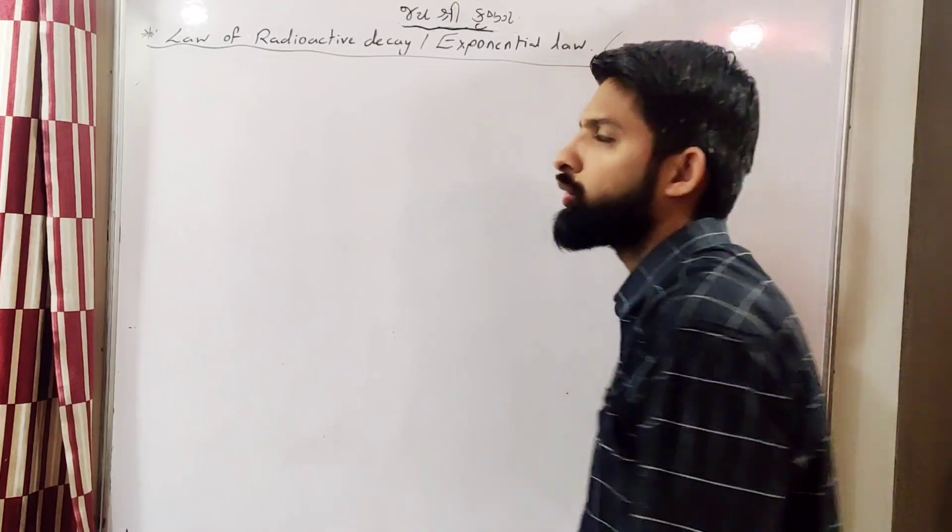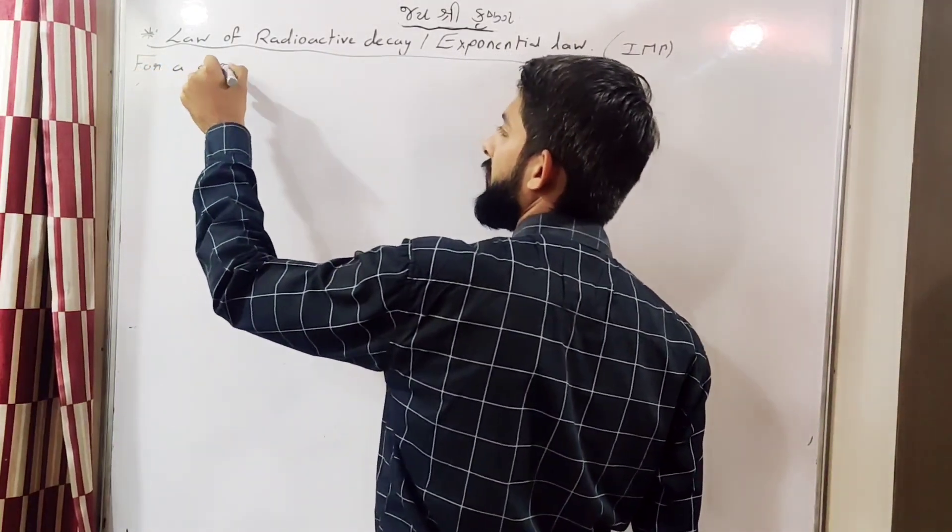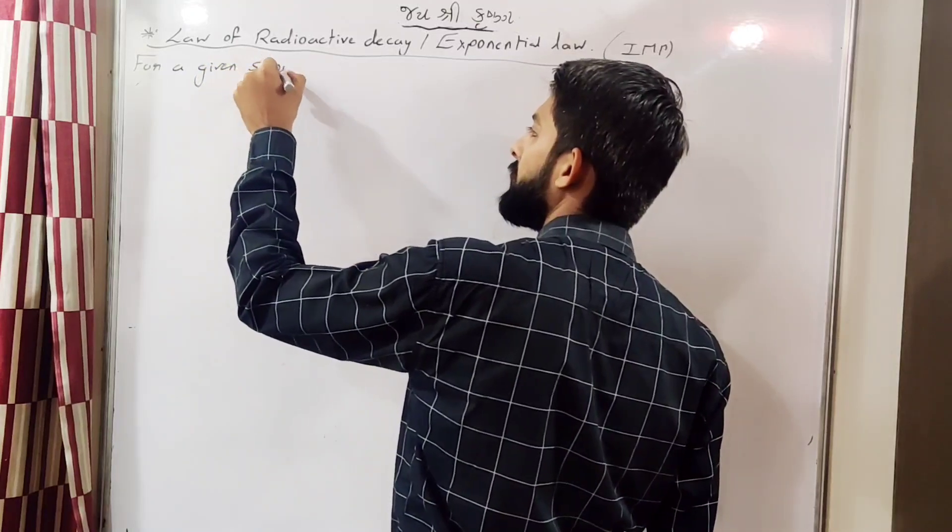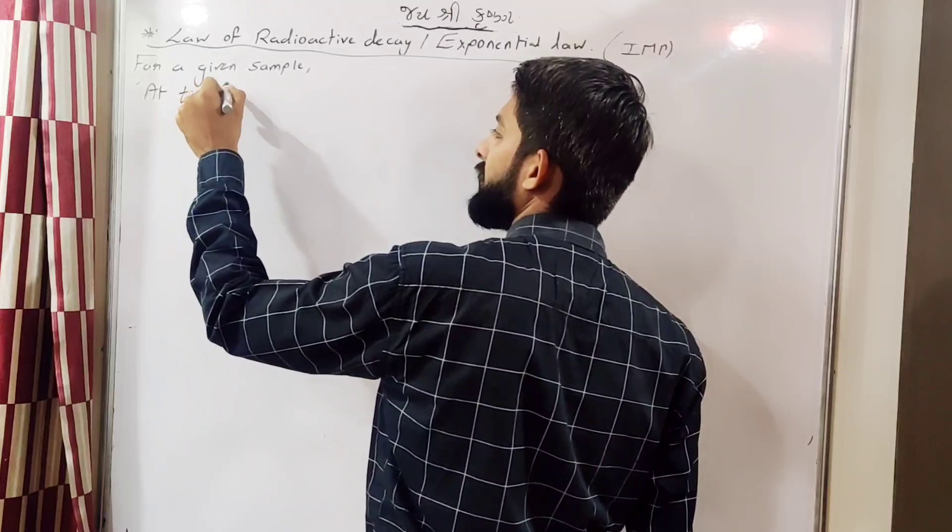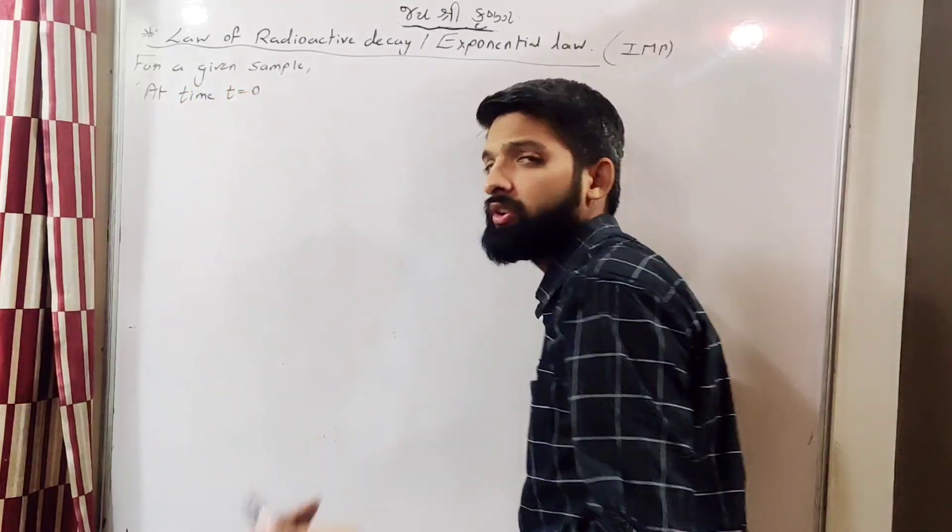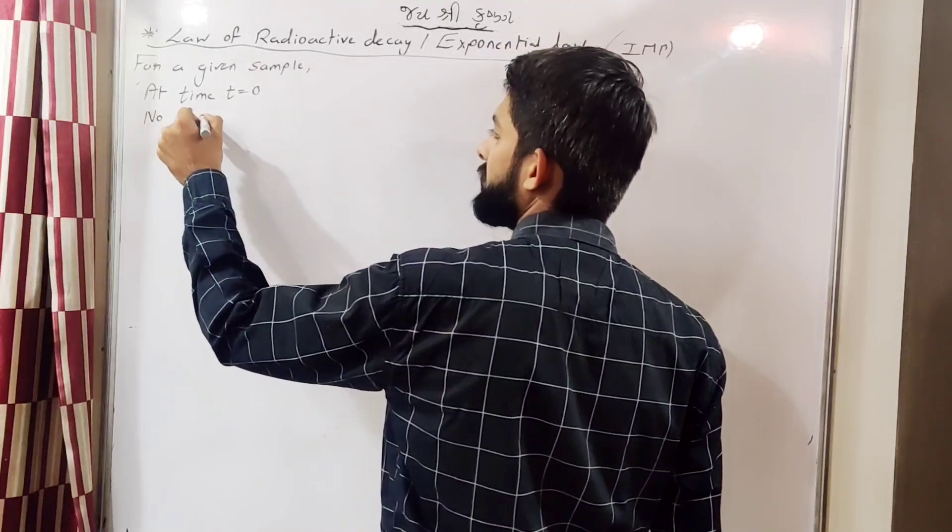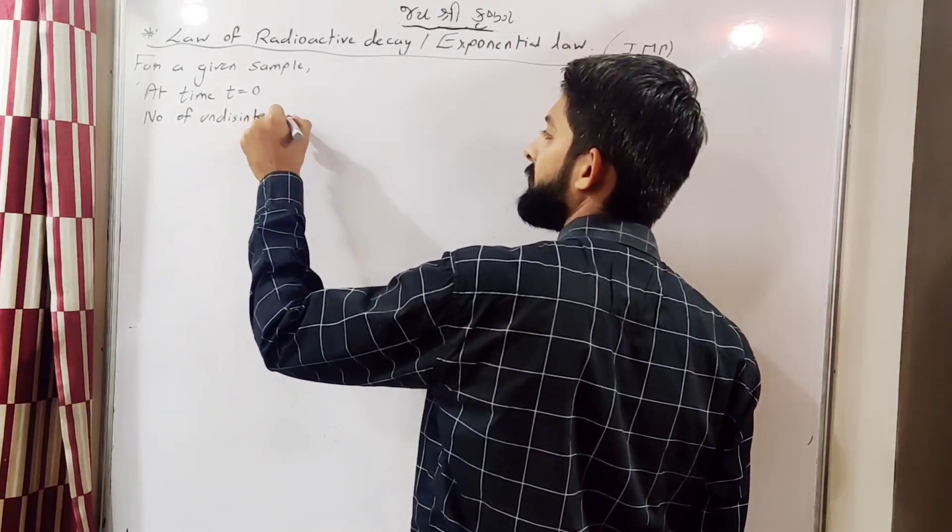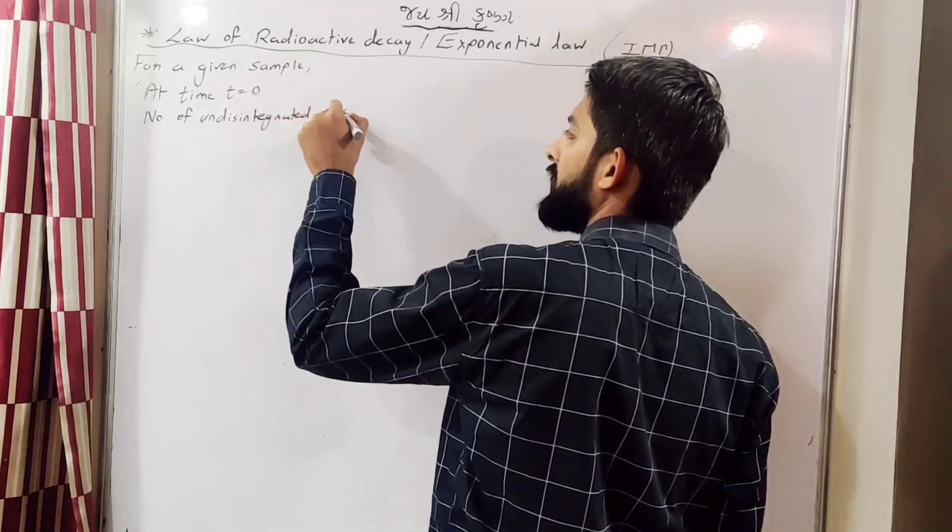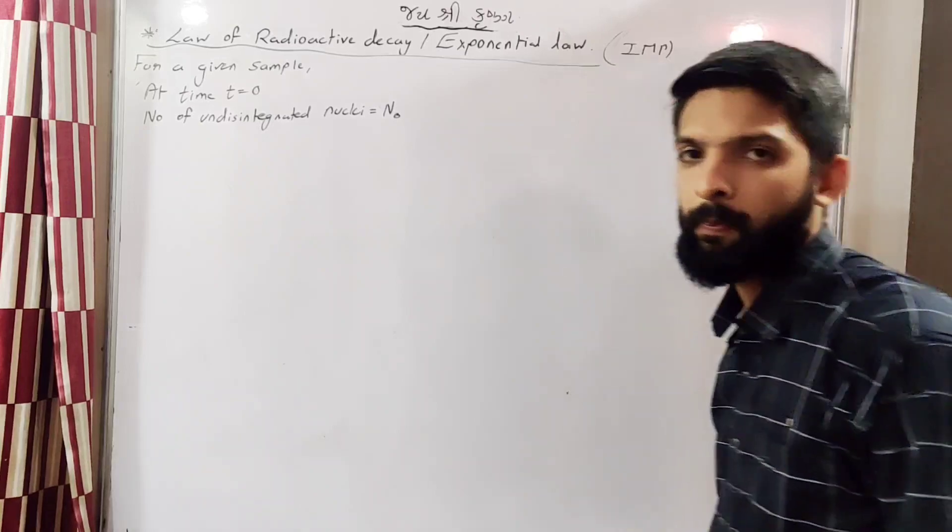Okay, so let's consider a given radioactive sample. At time t equals 0, the initial time, the number of undisintegrated nuclei, let's say they are n naught.